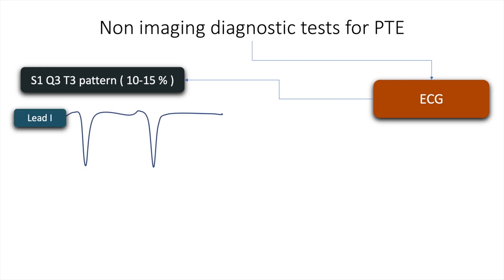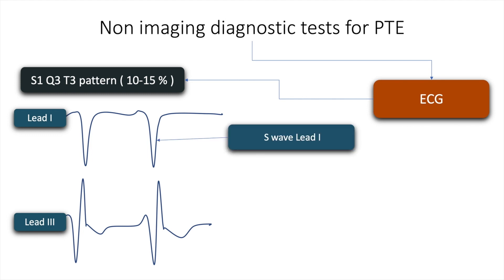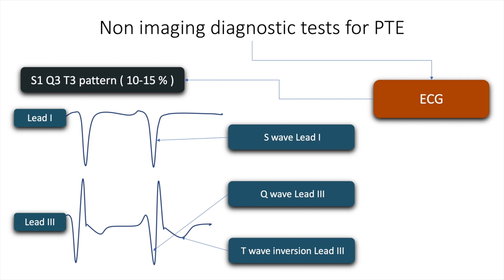This is the schematic diagram of leads 1 and 3. The S-wave in lead 1, the Q-wave in lead 3, and the T-wave inversion in lead 3 comprises the S1Q3T3 pattern.